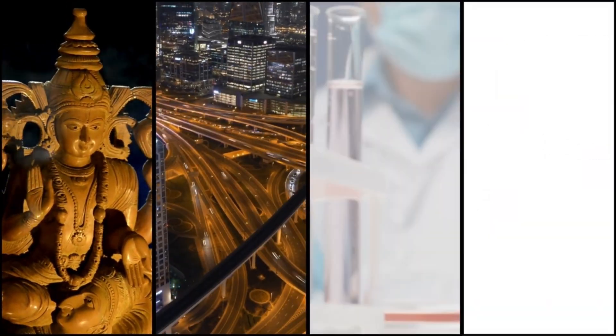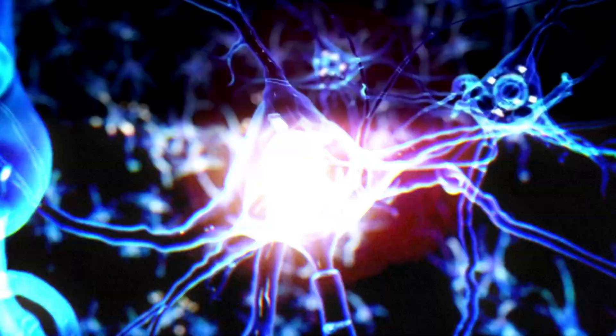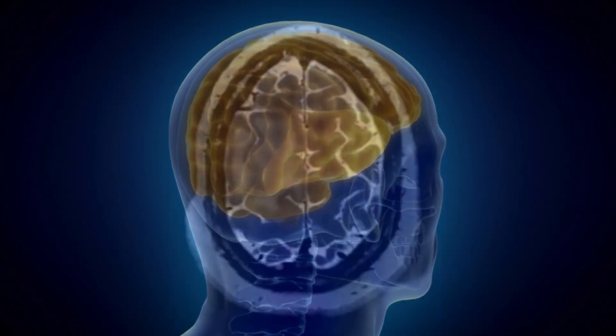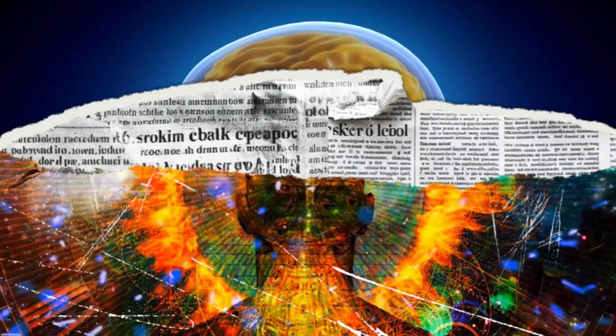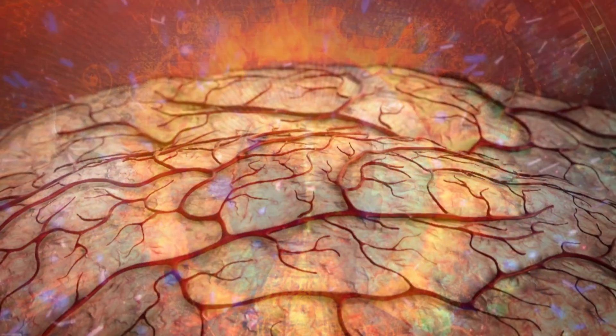One that would eventually shape gods, cities, science, and war. This isn't just about neurons and gray matter. This is a story of how the human brain became the most dangerous and miraculous object in the known universe. And it all began with a mystery so old we can barely see its edges.